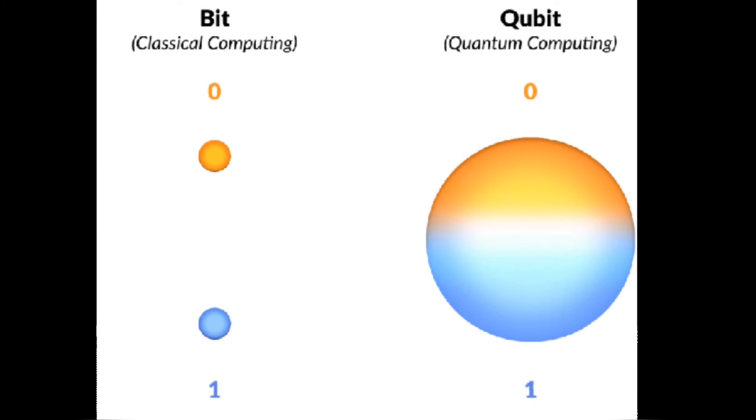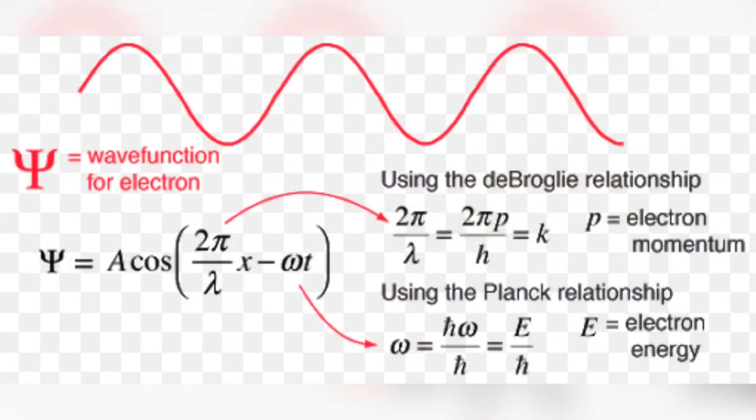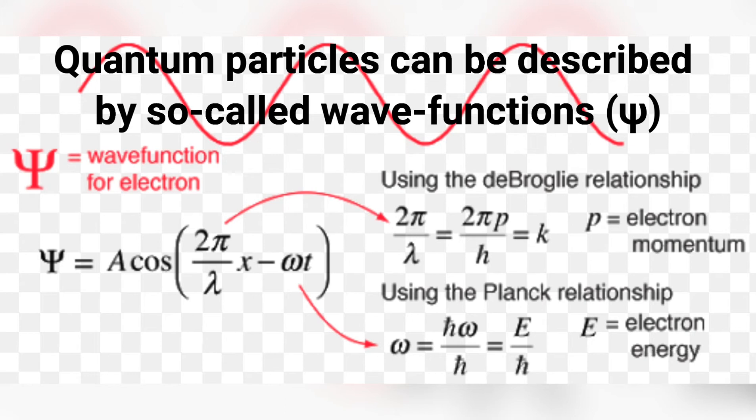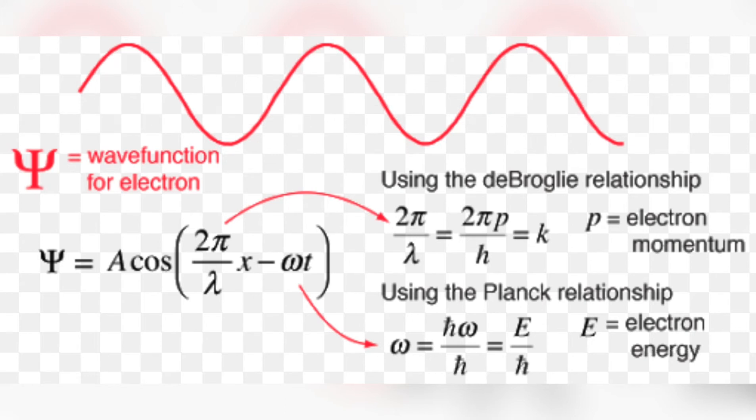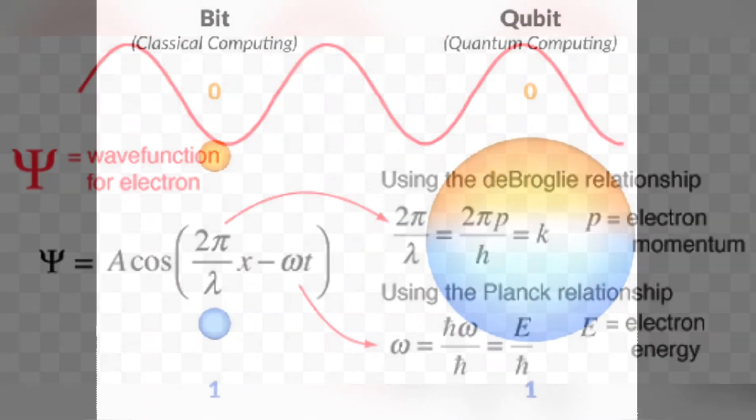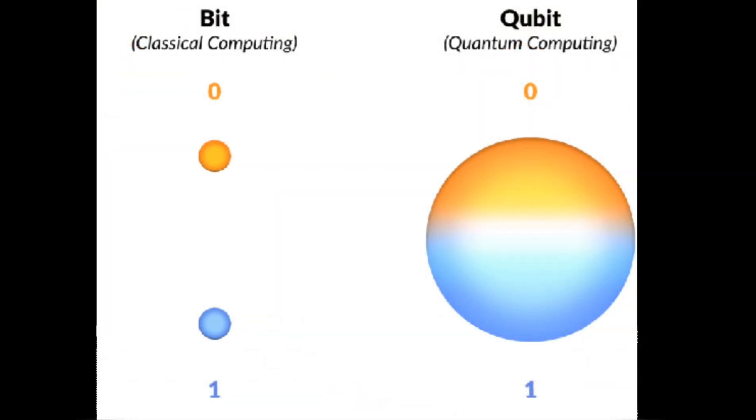So a particle can be in several states at the same time, simultaneously. But this is only possible as long as we do not have a look at the particle. You can imagine it like that. Imagine the electron being at several places at once, as long as we do not look at the particle, at the electron. As soon as we have a look at the electron, the electron has to decide where it is. This is quantum superposition.